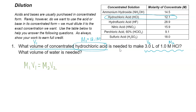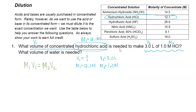It's really important to keep careful track of your pieces of information. So this first time I'm going to write it out again. V1 is what we're looking for. M1 is 12.1 molar from the table. V2 is 3.0 liters and M2 is 1.0 molar. It's critical to pair up the correct initial and final values. Our units for V1 will be the same as the units for V2 — so since V2 is in liters, V1 will also come out in liters. If V2 were in milliliters, V1 would also be in milliliters.